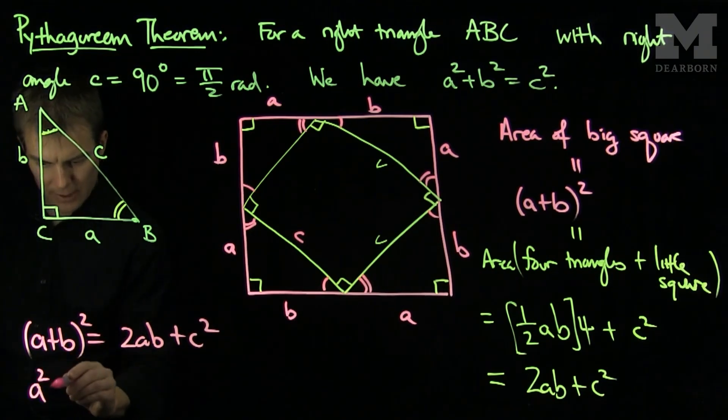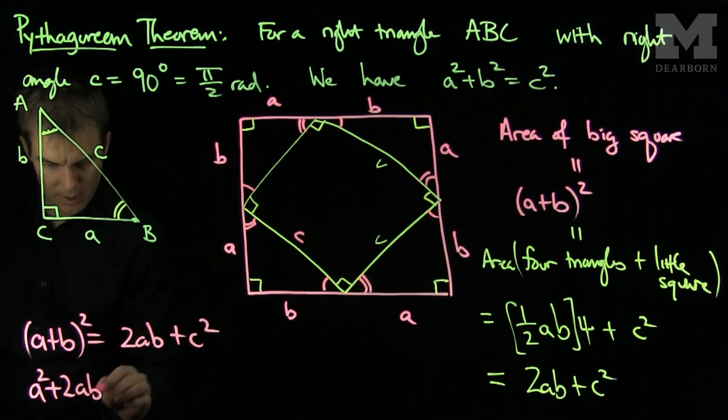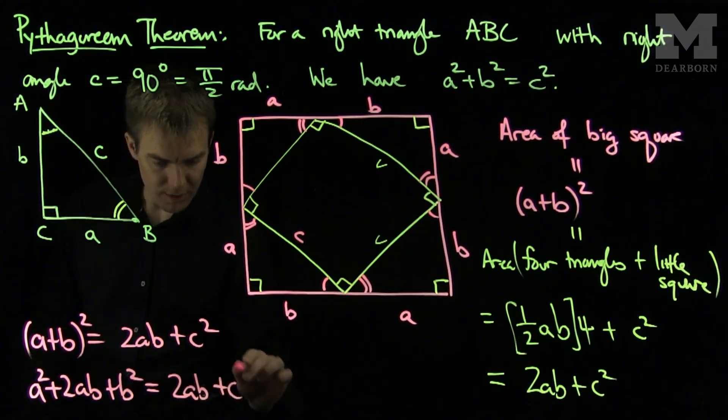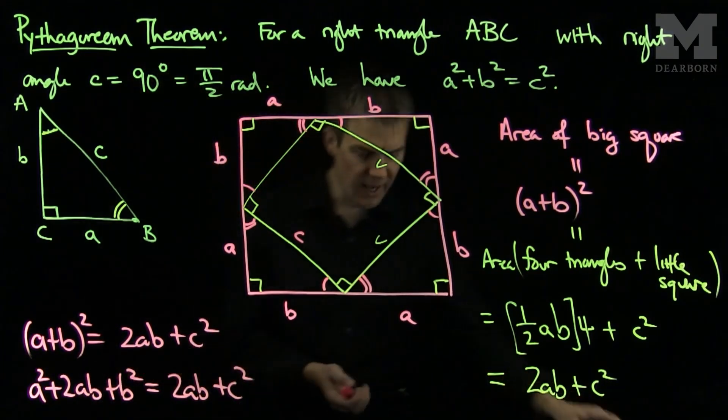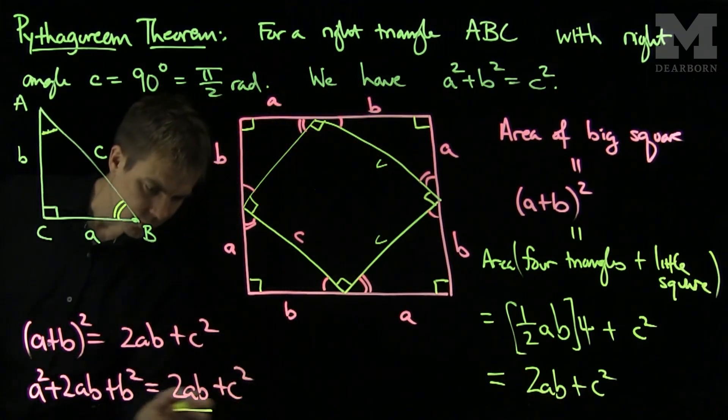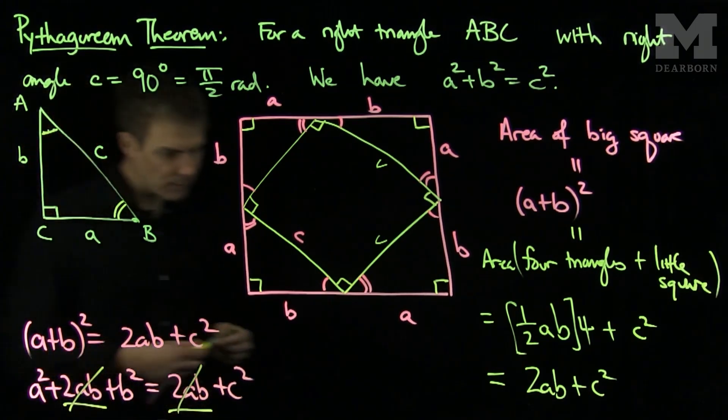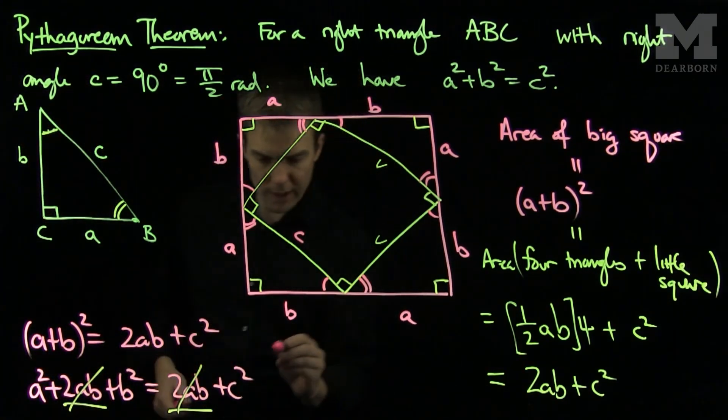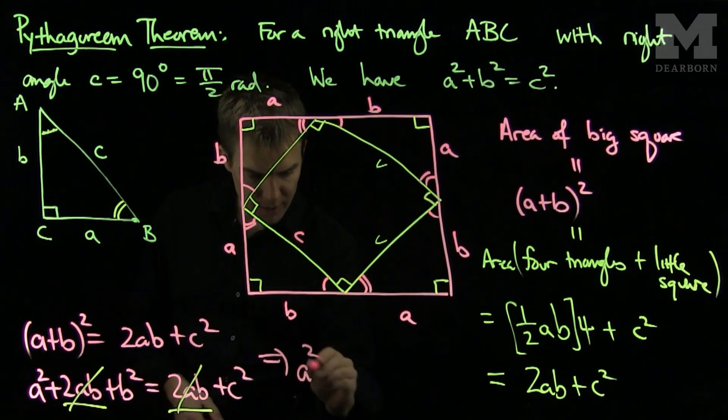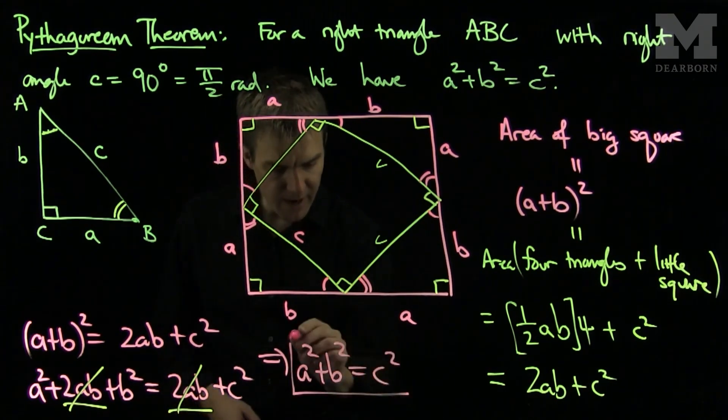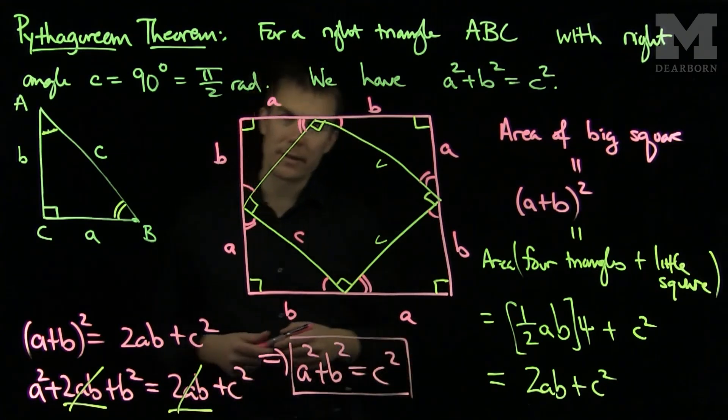So the right hand side, we foil it out. We'll get a² + 2ab + b² is equal to 2ab + c². And now there's a factor of 2ab on both sides of the equation, so it will cancel out. When it cancels out, we conclude that a² + b² is equal to c². And we have a proof of the Pythagorean theorem.